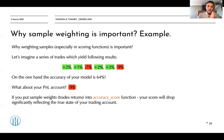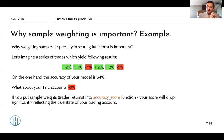Imagine a series of trades which yield the following results: +2%, +1%, -7%, +2%, +2%, and -1%. If you find the sign of each trade and put it into the accuracy score function, a positive trade equals one and a negative trade equals zero, meaning we did not succeed in trading positively.